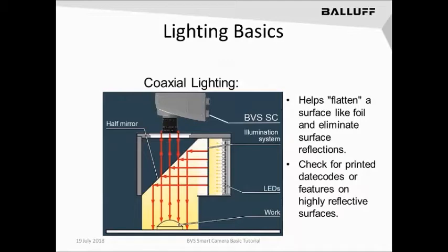Coaxial lighting also helps to reduce significant reflections or foil reflections from an inconsistent foil surface. It's very good for checking date codes or printing on the surface of a reflective bag, such as those used in electronic components, as well as helping to dramatically reduce the high reflectivity of certain shiny or polished surfaces.